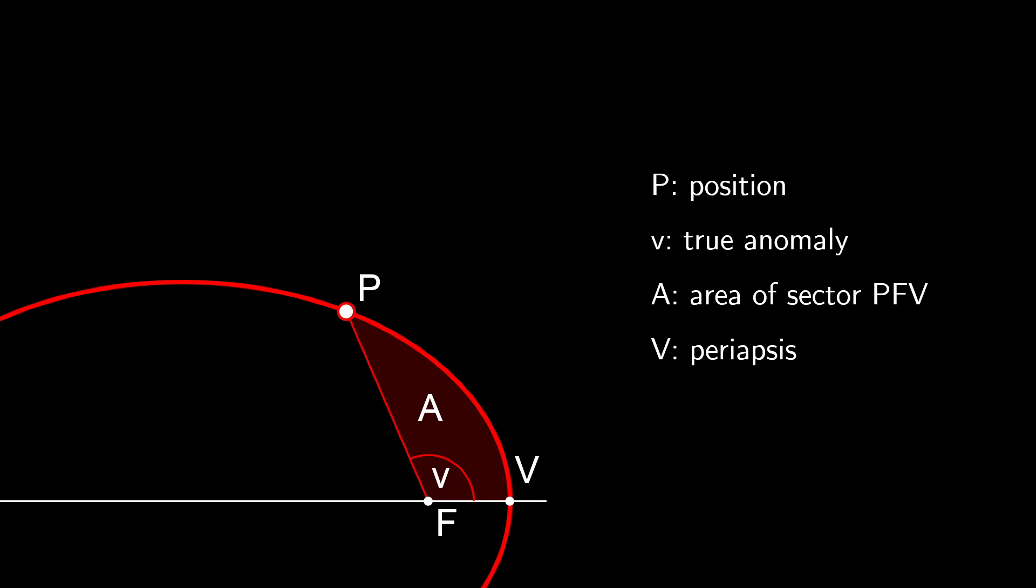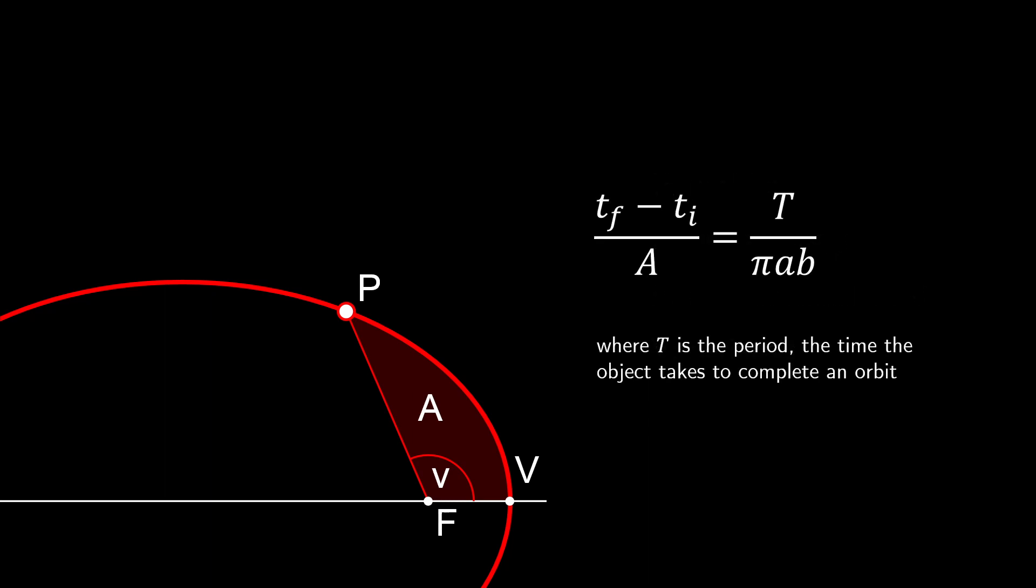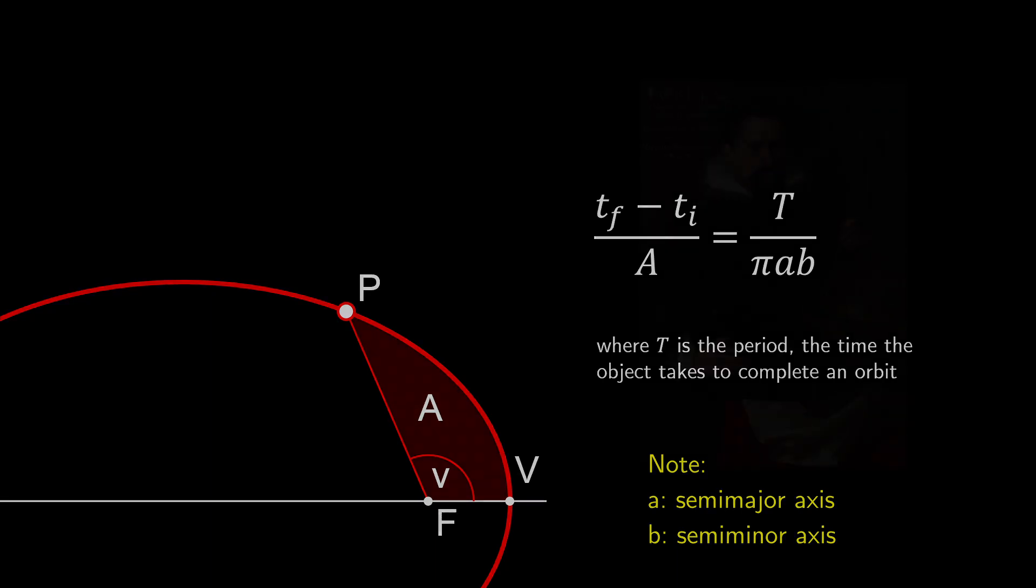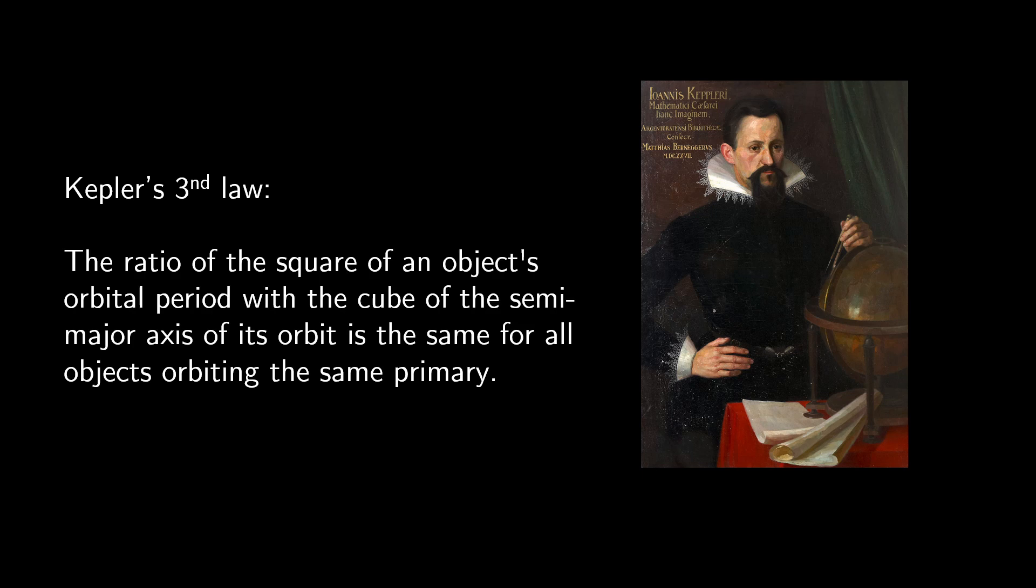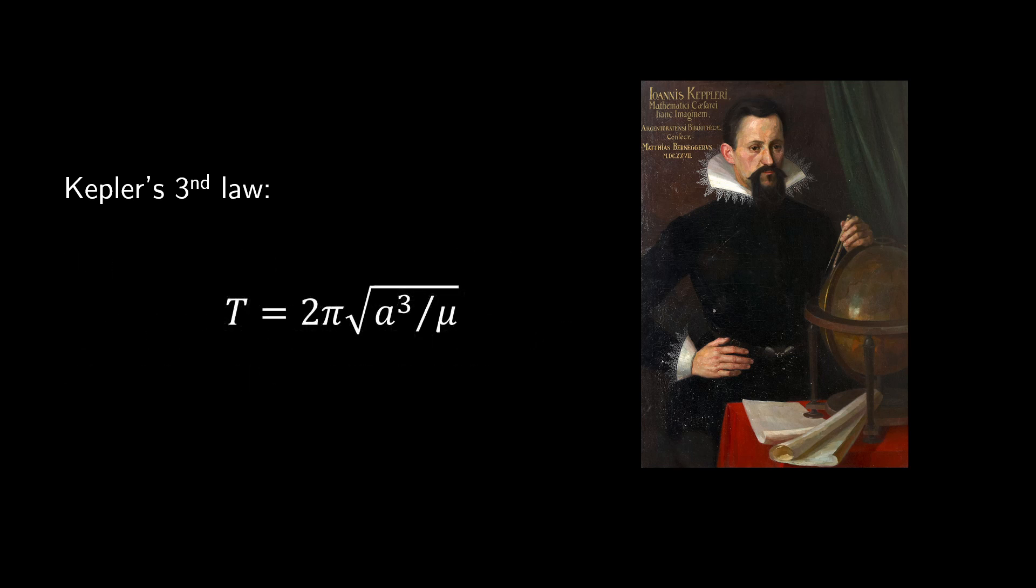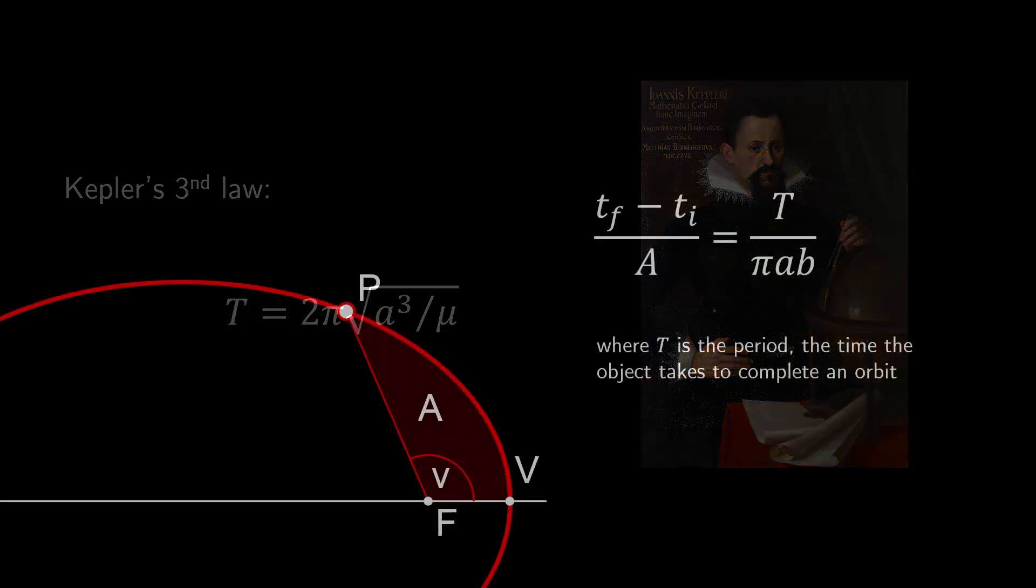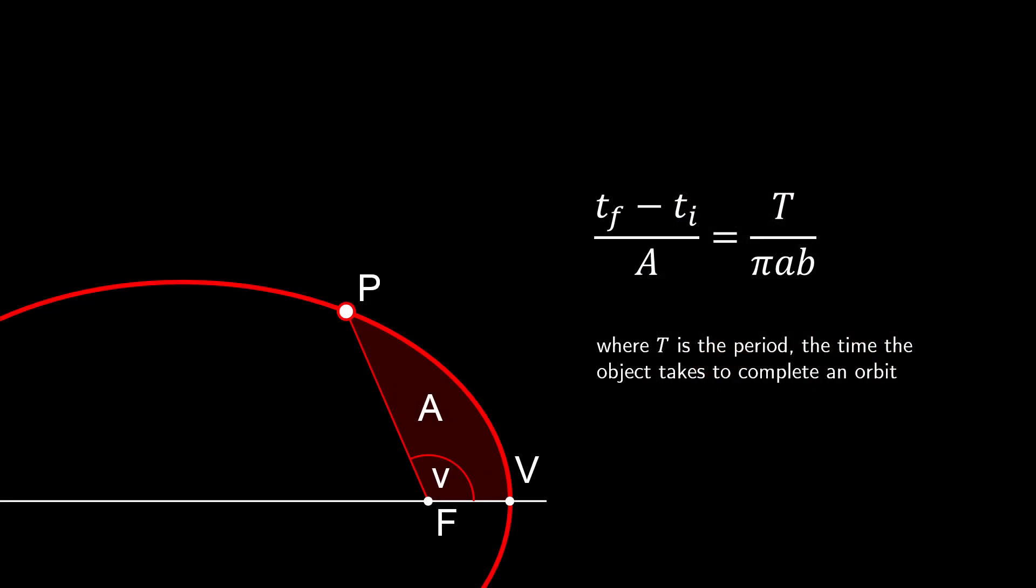Because we know that area is swept out at a constant rate in an orbit, we can make the following statement. The ratio of t-final minus t-initial, divided by area a, is equivalent to the period of our orbit, the time it takes to complete a full cycle, divided by the area of the ellipse, π times a times b. We'll also later make use of Kepler's third law, shown here, which recasts the period in terms of the semi-major axis and the gravitational parameter. The only unknown here is our area a, so the problem becomes expressing this quantity in terms of known parameters.